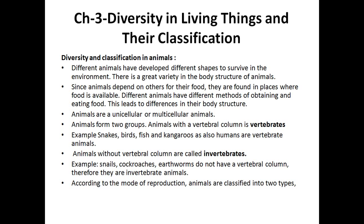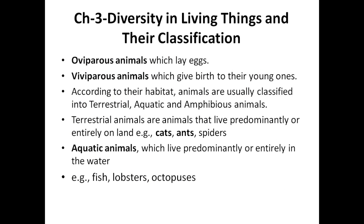Examples of invertebrates include snails, cockroaches, and earthworms — they do not have a vertebral column. According to the mode of reproduction, animals are classified into two types: oviparous animals, which lay eggs, and viviparous animals, which give birth to their young ones. Mammals always give birth to young ones, so they are viviparous.